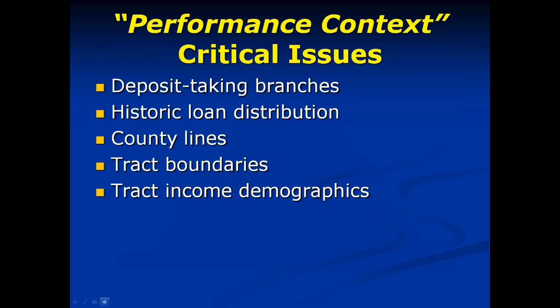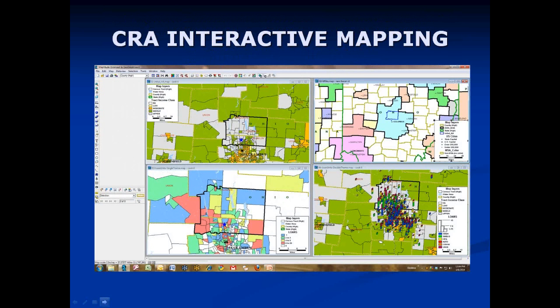When you construct your assessment area, you should take into consideration a number of very important variables. You must include wherever you maintain deposit-taking branches. You should consider the geographic distribution of your historic lending patterns. You need to recognize political subdivisions, in particular counties. You need to identify where tracts are located and their identities, and you need to consider tract income demographics. Having gone through this brief review of the essentials of assessment area delineation, we will now give you a demonstration of how this service will work.